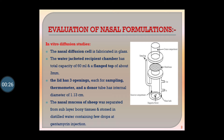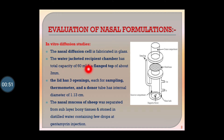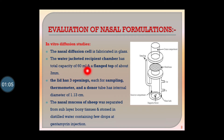For the in vitro diffusion study, a nasal diffusion cell is used, which is fabricated by glass. It has a water-jacketed recipient chamber with a total capacity of 60 ml, and a flange top of about 3 mm.